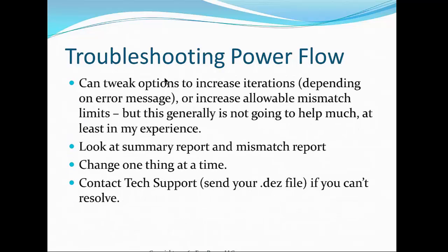You do have the option to increase the number of iterations in the control settings in power flow, but in my experience that usually doesn't help much — it's going to converge pretty quickly or it's not going to converge. You can look at the summary reports and the mismatch reports. Make one change at a time when troubleshooting. If all else fails, tech support will be happy to help — just email your problem and conditions along with your DEZ file and we'll try to work through it and figure out what's going on with your power flow model.